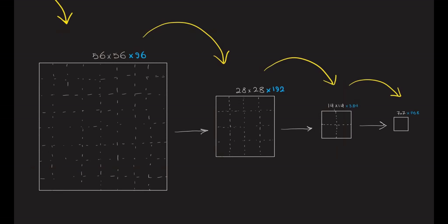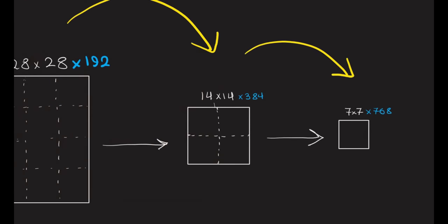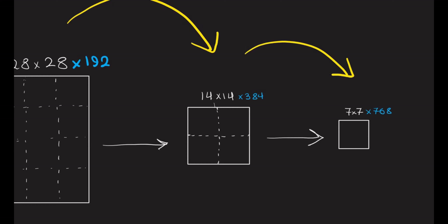We have four different stages: stage one is 56×56×96, stage two is 28×28×192, stage three is 14×14×384, and the last stage is 7×7×768.